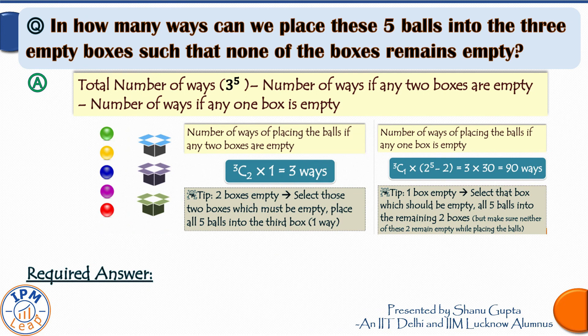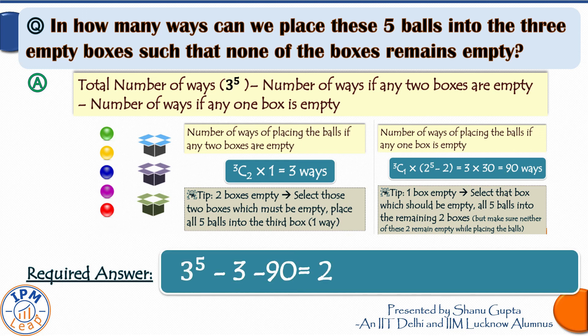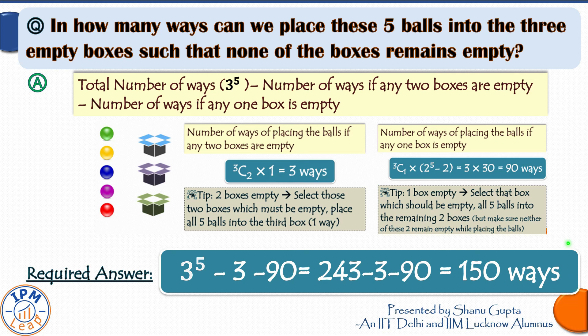To find our answer we subtract the numbers for these two cases from the total: 3^5 − 3 − 90 = 243 − 3 − 90 = 150 ways. So there are 150 ways of placing these five balls into the three empty boxes such that none of the boxes remains empty.